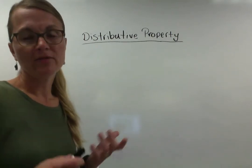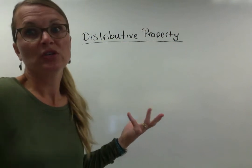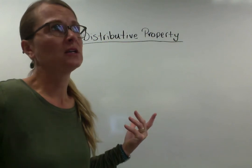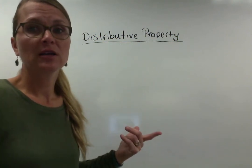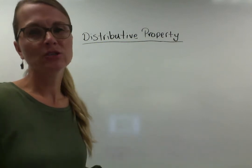So like if somebody asked me really quickly what's 2 times 52 and I go oh my gosh I don't know my times table for 52 but two 50s make 100 and two 2s make 4 so that would be 104. That's distributive property.